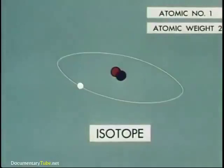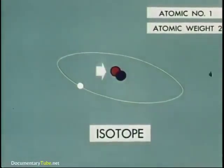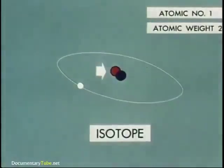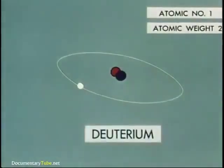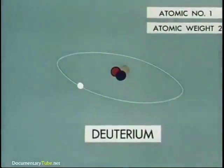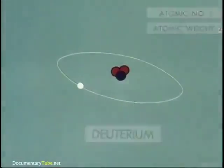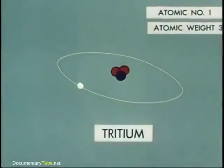For example, adding this neutron to a standard atom of hydrogen would produce this isotope of hydrogen known as deuterium. This is the hydrogen in heavy water. Adding another neutron produces a third hydrogen isotope called tritium.